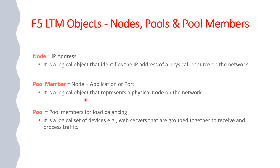Then we have something called a pool. A pool is a collection of pool members. Pool members can be multiple servers in tandem. For example, if we are hosting some content in our network and we want load balancing between multiple servers for that same content, we will make those servers a part of a pool. So those servers will be called pool members of a particular pool. We will see that in the next slide and it will get more clear. To reiterate: a node is an IP address, a pool member is a node plus an application port or service, and a pool is a collection of pool members for load balancing traffic.